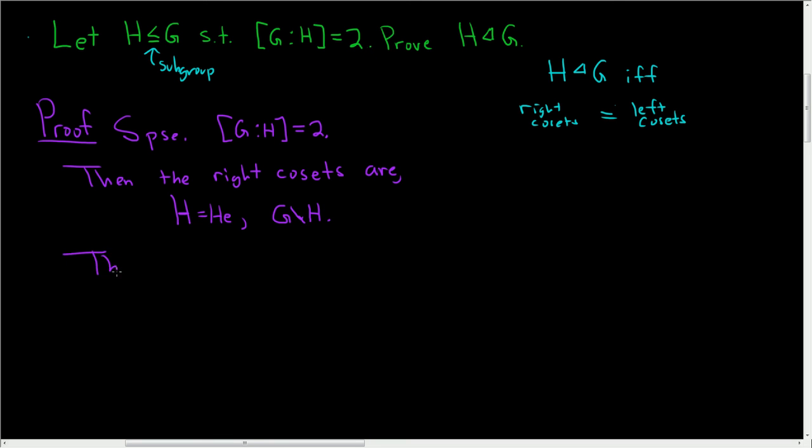So then the left cosets are, well, as before, one of them is H. So that would be EH. And again, since the cosets actually partition G, that means that their union is G and the union is disjoint. The other left coset has to be G set minus H.